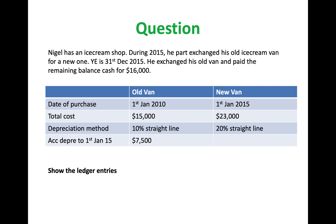There is a table which gives you important information: the date of purchase for the old and new van, the cost of the old van and the new van, the depreciation methods used for each van, and also the accumulated depreciation to the date of disposal, which is $7,500.